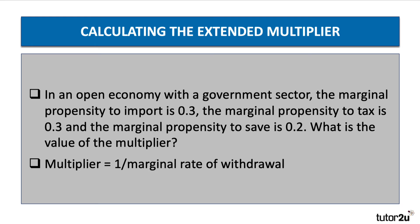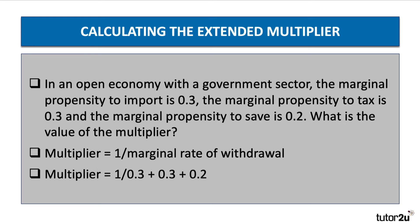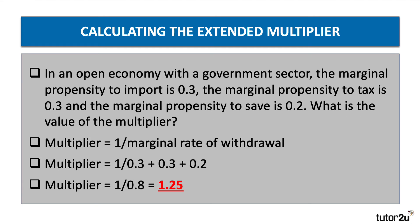The multiplier is one divided by the marginal rate of withdrawal, so we have to add together three leakages. 0.3 plus 0.3 plus 0.2 is 0.8. And if we divide one by 0.8, we get 1.25. You can see that the combined leakages are 80% every time money goes around the system. So when the rate of withdrawal is high, you tend to get a pretty low value of the multiplier — in this case, 1.25.